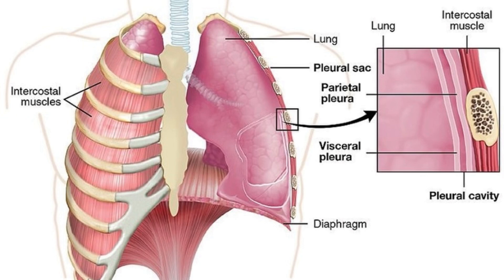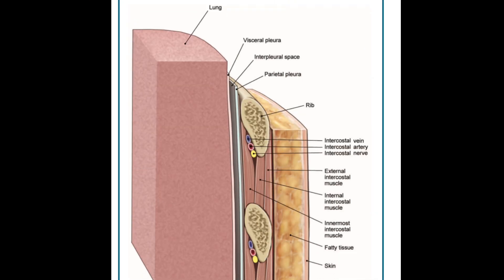The primary function of the pleura is protective. In other words, it prevents the lungs from rubbing against the ribs and other organs, avoiding damage by friction, and therefore providing a barrier to infection by sealing one cavity from another. In addition, because each lung has a separate set of pleura, it helps prevent both lungs from collapsing if air enters into one side.